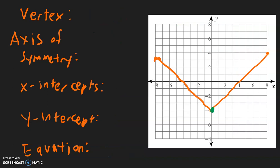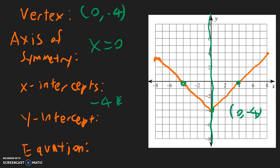For this example, the vertex is down here at 0, negative 4. The axis of symmetry will be x equals 0, and you can also see that the axis of symmetry is the y-axis. The x-intercepts are at negative 4 and positive 4, so this one has two of them. The y-intercept is right here at negative 4. The equation will be y equals absolute value of x — the x-coordinate is 0, so there's no plus or minus anything inside with x. But the y-value, negative 4, goes on the outside.